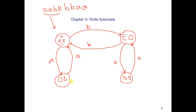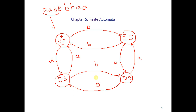Similarly, from odd-A/even-B, if we read another B, B's become odd and we move to odd-A/odd-B. If we then read another B, B's become even again and we move back to odd-A/even-B. So this completes the finite automata for the even-even language.